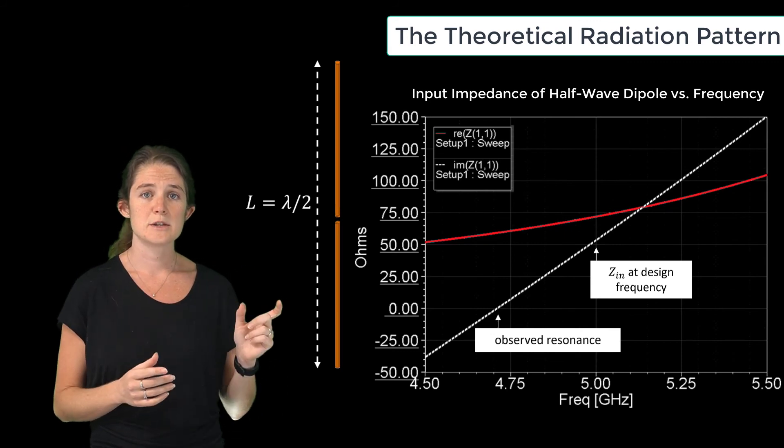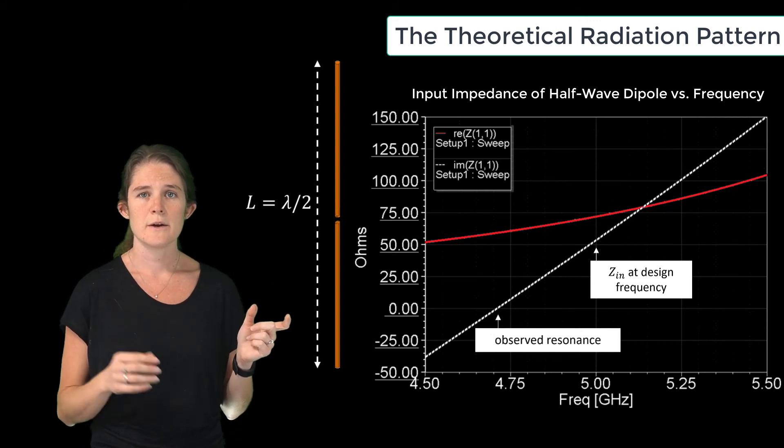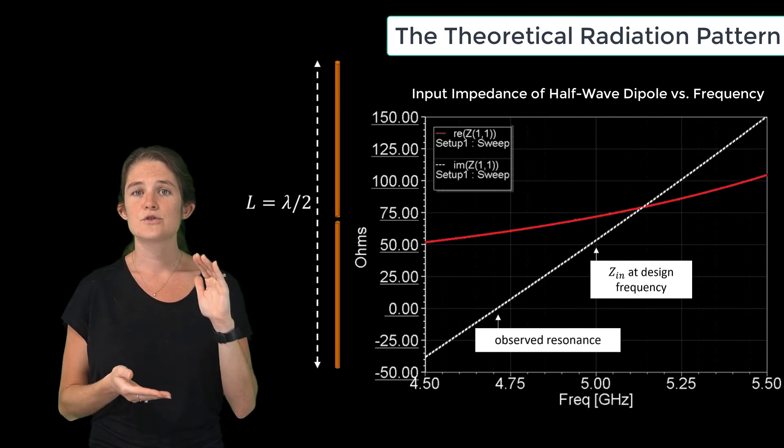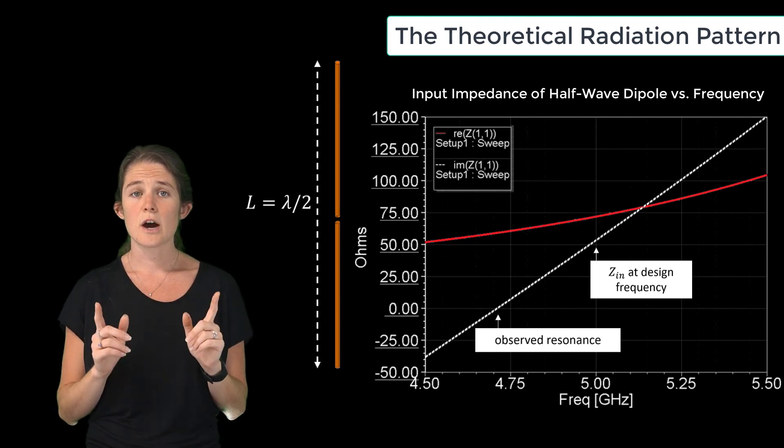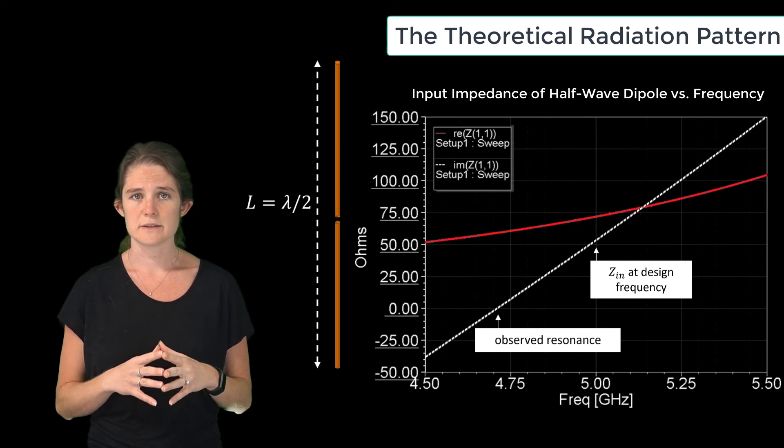Again, in order to shift the operating frequency up to match your target design frequency, all you would need to do is slightly trim the ends of the antenna to compensate for the effective length added by the fringing fields.